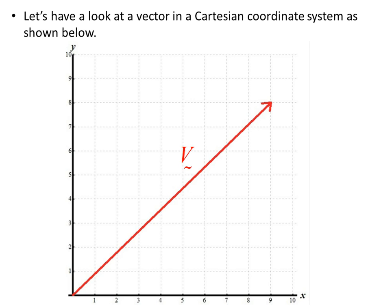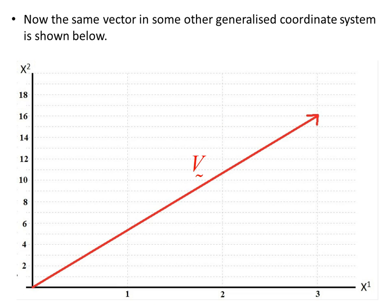Let's look at a vector in a Cartesian coordinate system. Our vector has coordinates x equals 9 and y equals 8. Now in a generalized coordinate system, the exact same vector — because a vector is a geometric object — will not change its physical length from one coordinate system to another. The same vector in the generalized coordinate system has different component values: x1 equals 3 and x2 equals 16, which is very different from the 9 and 8 we had in the Cartesian system.